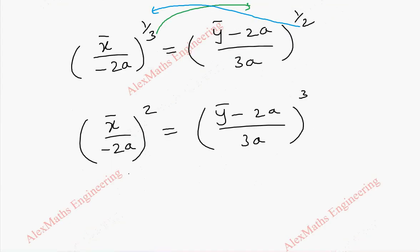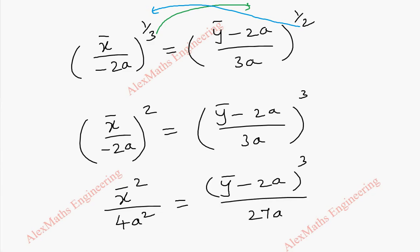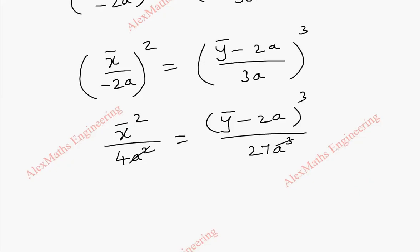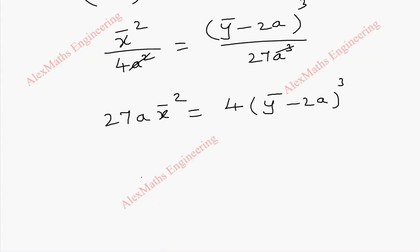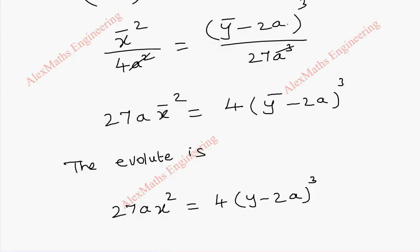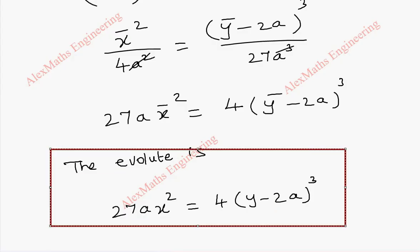Taking square and cube individually for numerator and denominator: x̄² / 4a² equals (ȳ minus 2a)³ / 27a³. The a² and a³ cancel, leaving only 27a. By cross multiplication, we get 27a x̄² equal to 4(ȳ minus 2a)³. Replacing x̄ and ȳ with x and y, the evolute is 27ax² equal to 4(y minus 2a)³. This is our required equation of the evolute.